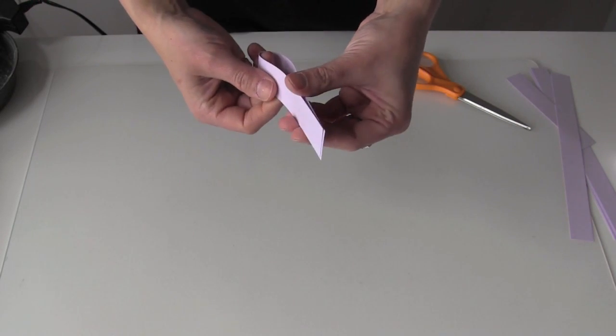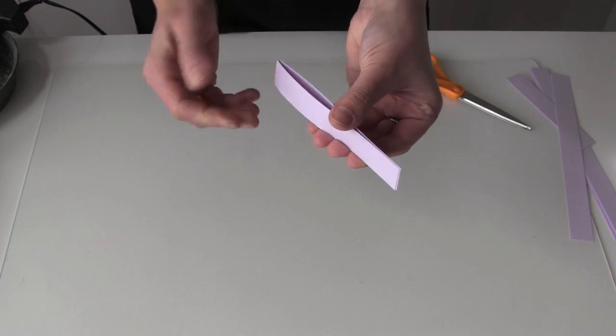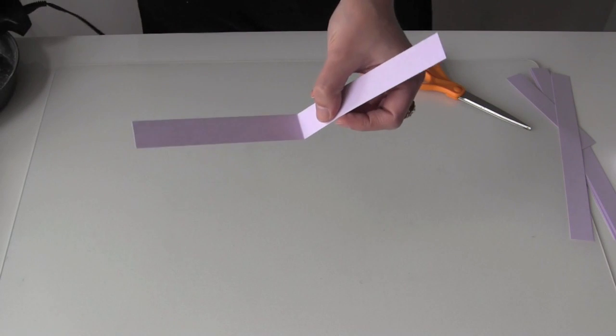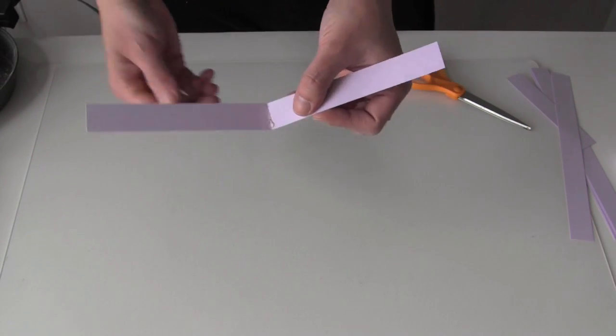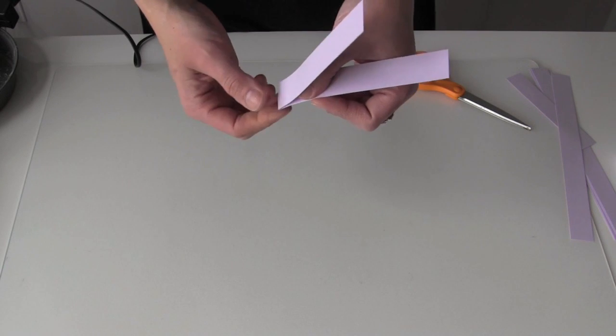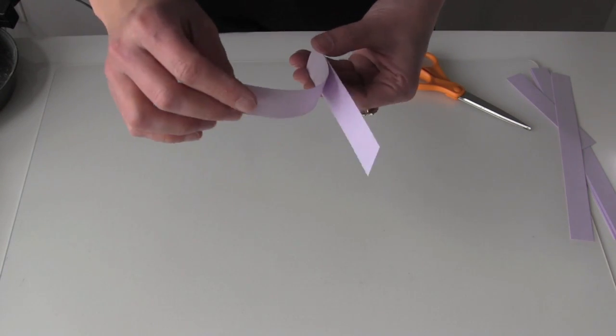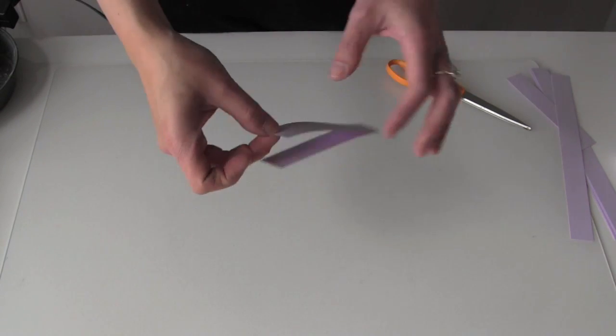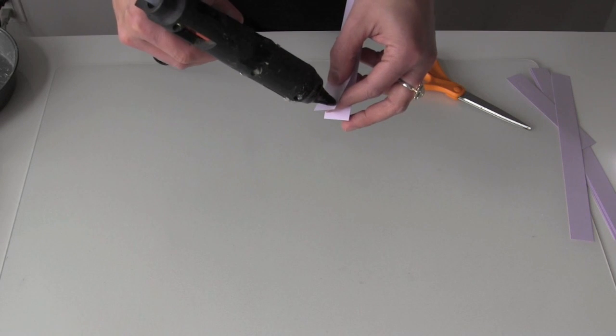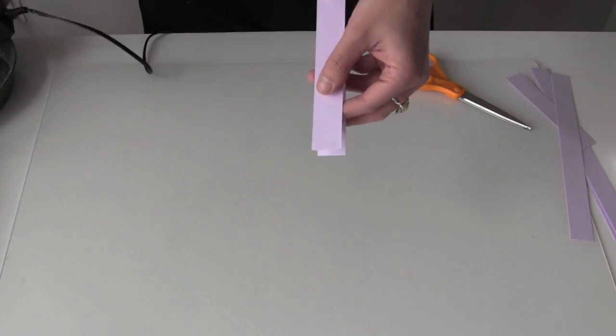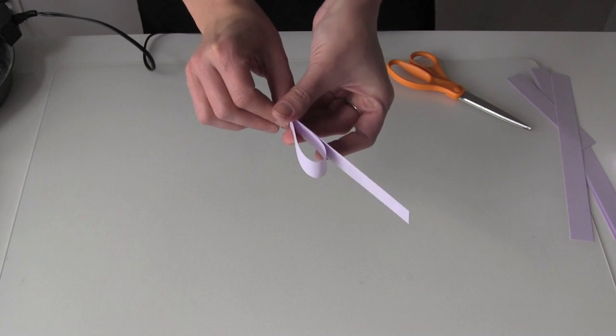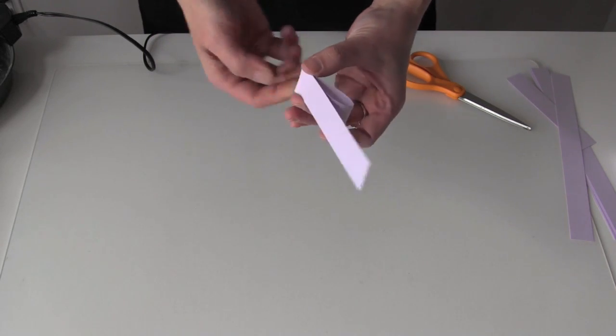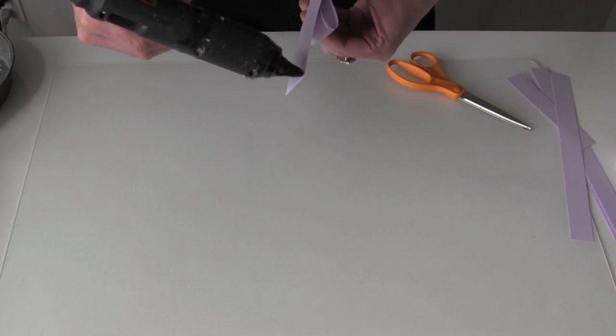This next one is going to be a heart shape. So I'm just folding it in half and I'm going to hot glue right in the crease. And this will just hold the shape a little bit better. And then I'm going to glue one end. And pull it around and down to where I made my crease. Flip it over and do the same on the other side.